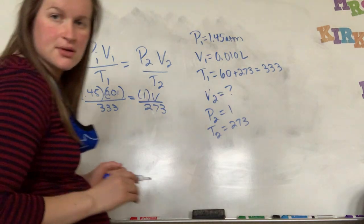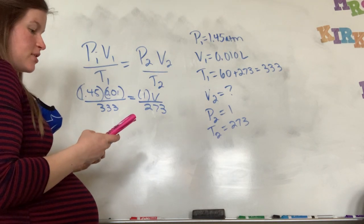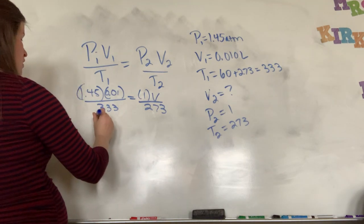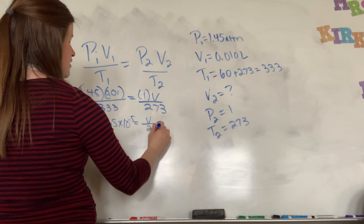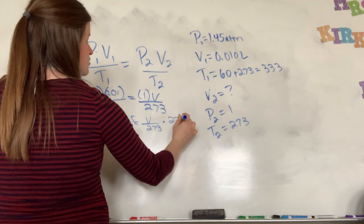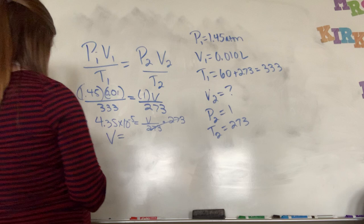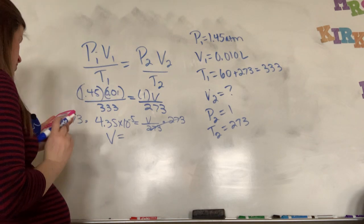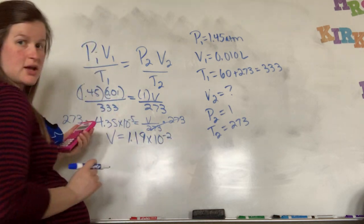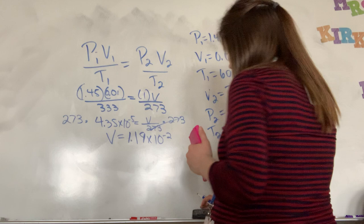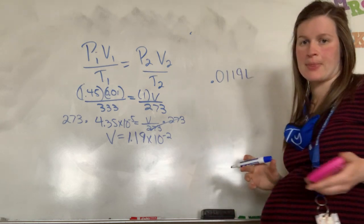And so we're going to go ahead and do that. So I have 1.45 times 0.01 divided by 333. And I get 4.35 times 10 to the negative fifth equals V over 273. So next I'm going to multiply both sides by 273 to get units to cancel, to get the numbers to cancel. And that's going to give me my volume. And so whenever I take that and I multiply by 273, I get my answer, which would be 1.19 times 10 to the negative second. Or in other words, that's just going to be 0.01. So then my volume is equal to 0.019 liters.